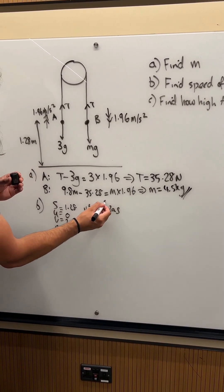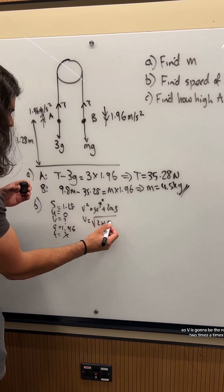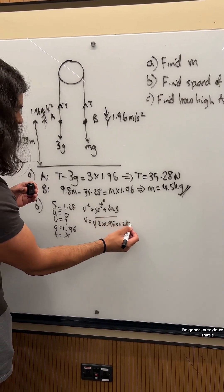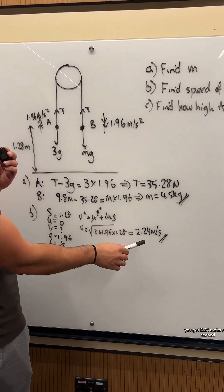But U is 0, so V is going to be the root of 2 times A times S. You get 2.24 meters per second.